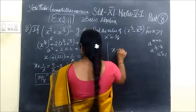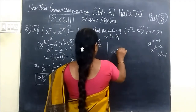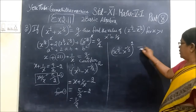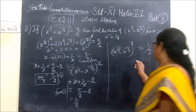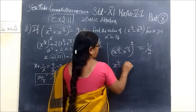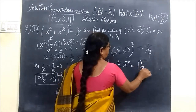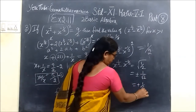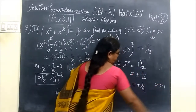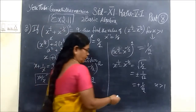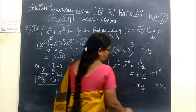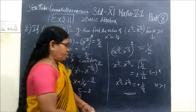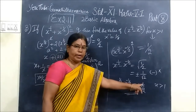So (x^(1/2) - x^(-1/2))² = 5/2 - 2 = 1/2. Taking the square root, x^(1/2) - x^(-1/2) = ±1/√2. Since x > 1, we take only the positive value, so x^(1/2) - x^(-1/2) = +1/√2.